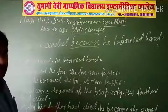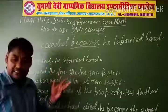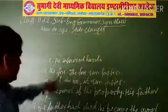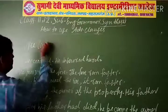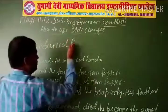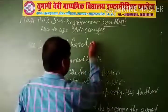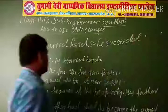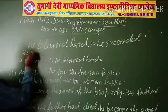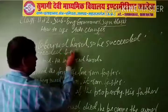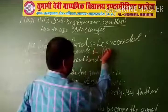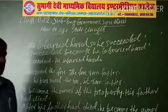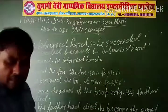Now, in the second method, you will also be able to join this sentence. You have to write the first sentence: He laboured hard. Now the result: He succeeded. In this way, we have to join two or more simple sentences into one complex sentence.